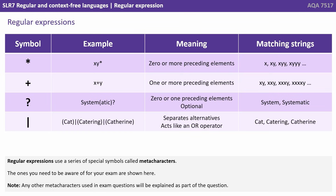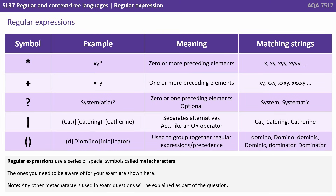The pipe symbol separates alternatives and acts like an OR operator. For example, cat|catering|Catherine will accept any of those as options. Brackets are used to group together regular expression precedences.